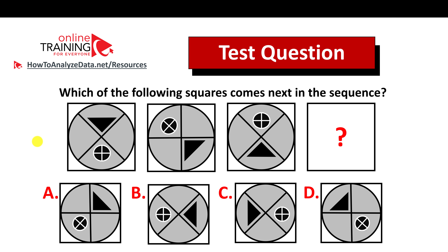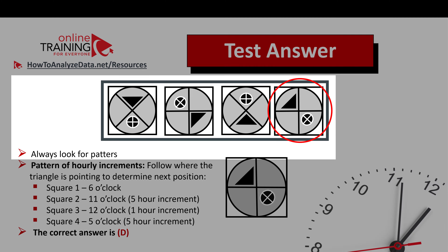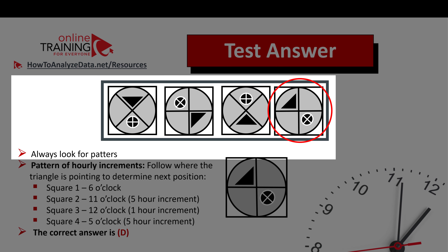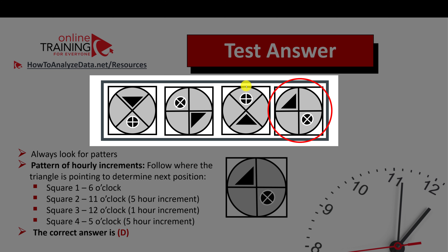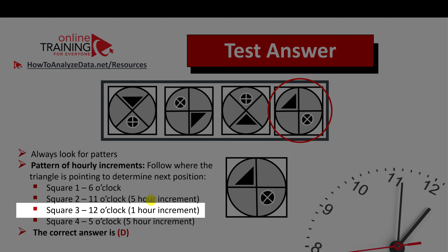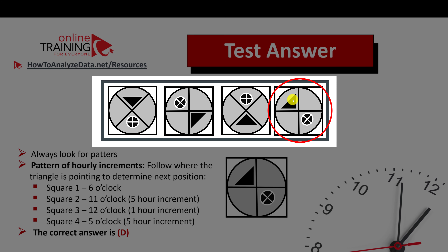Did you figure out the answer? Let's continue to see how we can get to the correct solution. As usually, my recommendation is always look for patterns. In this particular case, we're dealing with the pattern of hourly increments. We determine the hour based on where the triangle is pointing. If you look at the first square, the triangle is pointing to 6 o'clock. Then the next square, the triangle is pointing at 11 o'clock — that's a five-hour increment from 6 o'clock. Next, the triangle points at 12 o'clock — a one-hour increment. So in the next shape we go back to a five-hour increment, which brings us to 5 o'clock. So the correct answer is choice D.